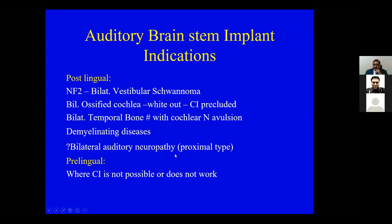In peripheral auditory neuropathy, a cochlear implant is brilliant. The differentiation between peripheral and central neuropathy is usually made by an EABR — electrically evoked auditory brainstem response — where you place a J-shaped electrode near the round window, stimulate it, and try to elicit a brainstem response. If you get a response, it is peripheral and these people do very well with cochlear implants. But if you do not get a response, it is classified as central, and brainstem implants in that situation have not been very good — hence the question mark.